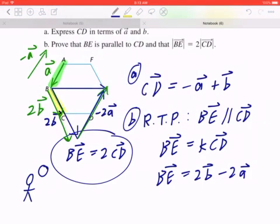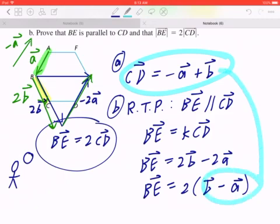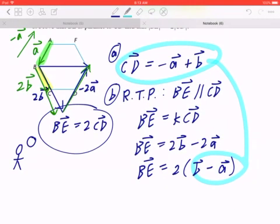Once you have that, what you can do is you can factor two to the front. And in brackets, it's B minus A. And we circle back to part A. So if you think about part A, we know that CD equals to negative A plus B, or B minus A. Again, there's a commutative law. Negative A plus B is the same as B minus A.